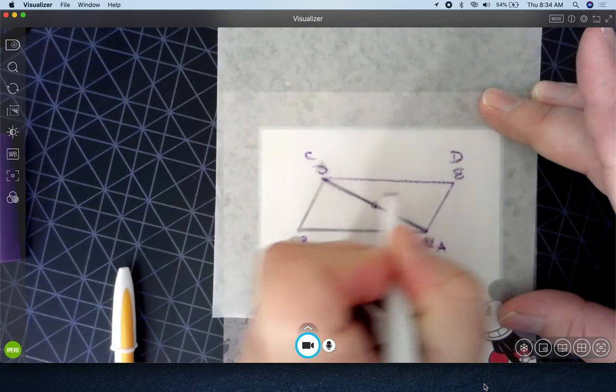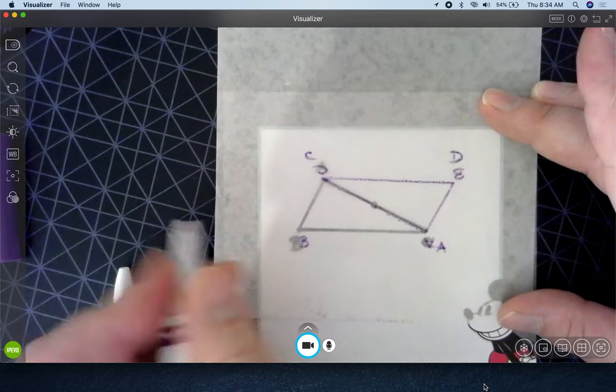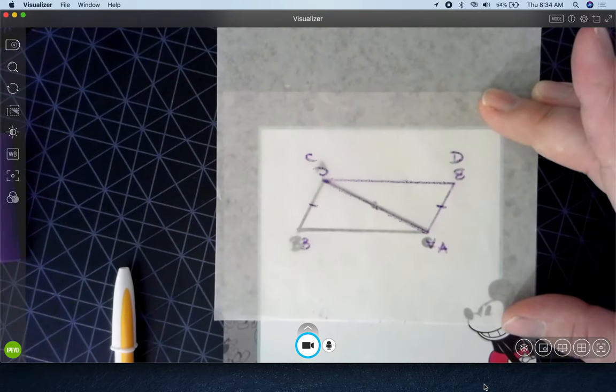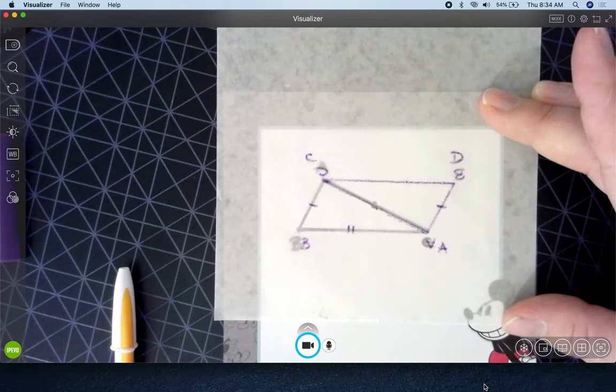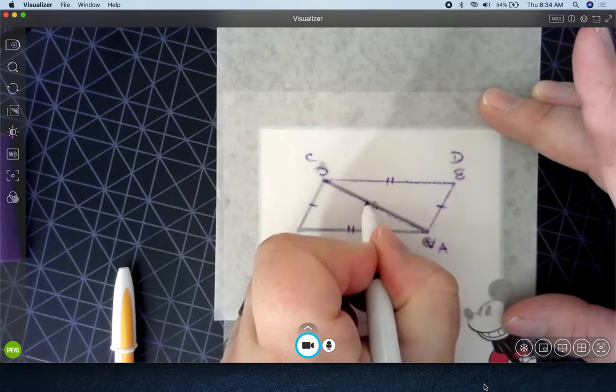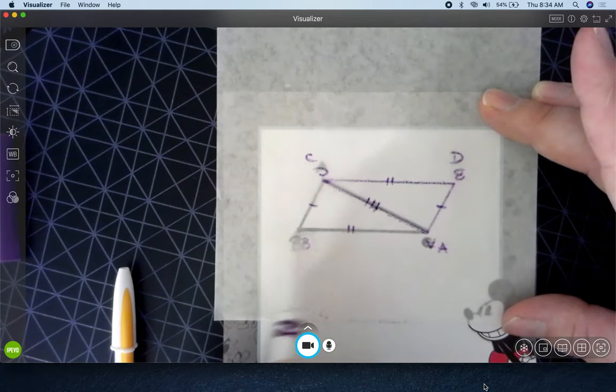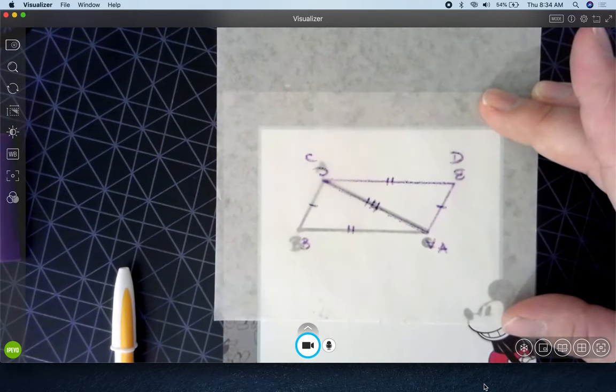But we discovered that because this is a rigid transformation, this side is equal to this side. And this line segment is equal to this line segment. And this one's shared between the three of them. And because they're the same size, that makes these parallel. It makes it a parallelogram.